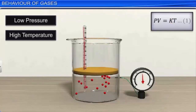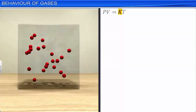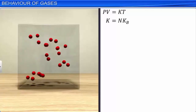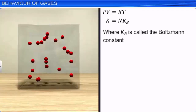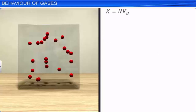For a given sample of gas, K is constant, and can be written as K = N × K_B, where N is the number of molecules in the given sample. From observation during various experiments, it is clear that the value of K_B is constant for all gases and is called the Boltzmann constant. Its value is 1.38 × 10⁻²³ joules per Kelvin. Substituting K = NK_B into PV = KT, we get PV = NK_BT.